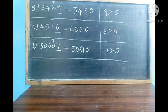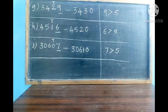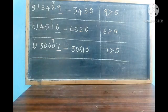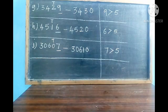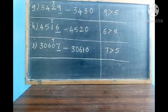J division: 30607. In the ones place 7 is there. 7 is greater than 5, so we write the next one of 0. The next number of 0 is 1. Our answer is 30610.